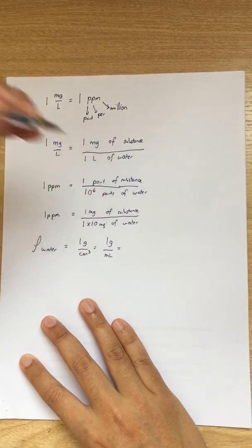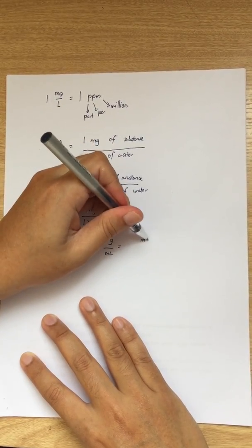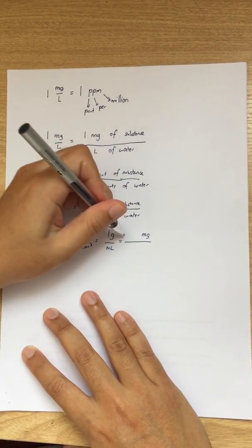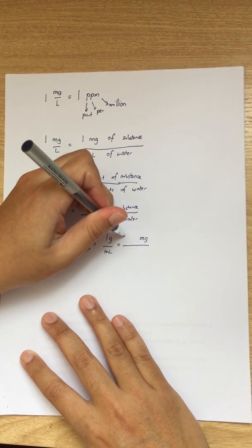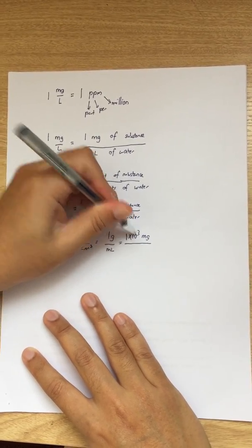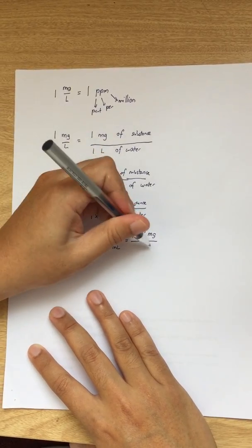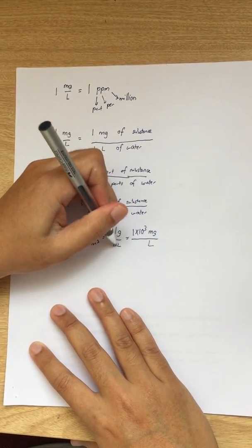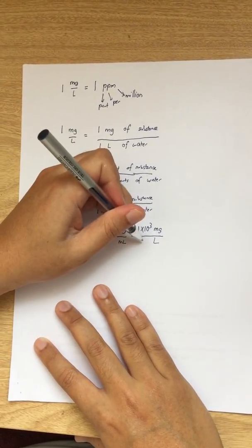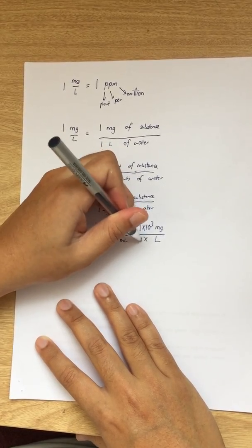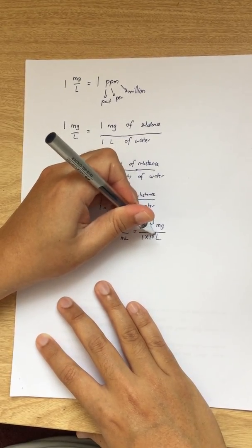And if I like to change this gram into milligram, so I put milligram over there, and then that is equivalent to 1,000 milligram divided by, I like to change milliliters to liters, so I put liters over there. So this stands for 10 to the power minus 3.